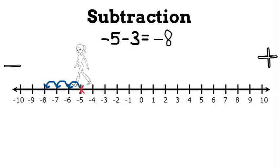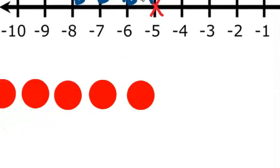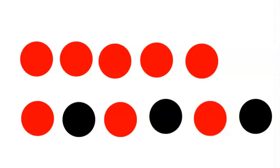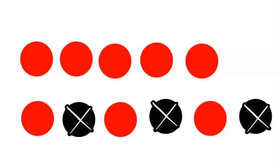Now for our black and red chips model. We start with negative 5. We want to take away positive 3, but we don't have any, so let's add zero pairs, because adding zero doesn't change the value to a number, but adding the three pairs allow me to take away three black ones. Then I have eight red ones left, so my answer is negative 8.